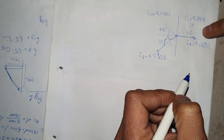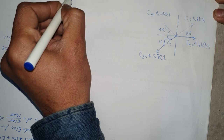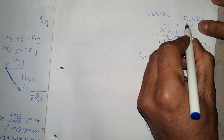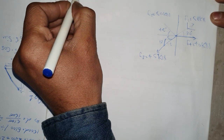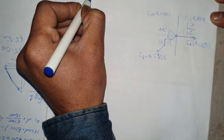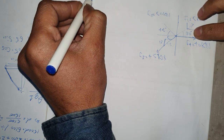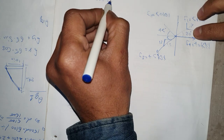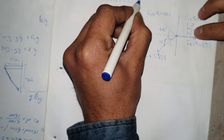First, we divide all the forces into their x and y coordinates. For F1, F1x is equal to 58 kilonewtons times cosine of 30 degrees, which gives us F1x equal to 50.23 kilonewtons.